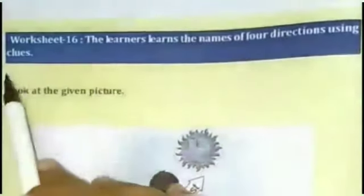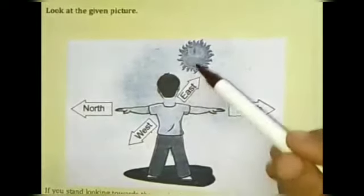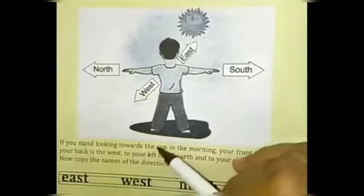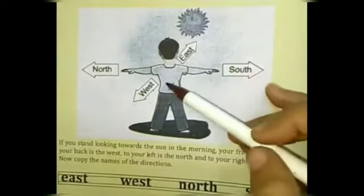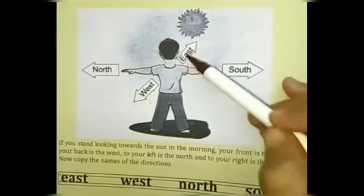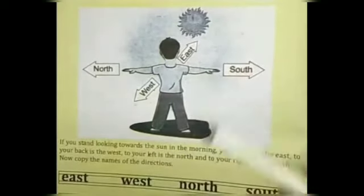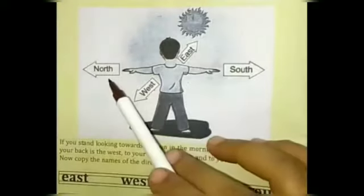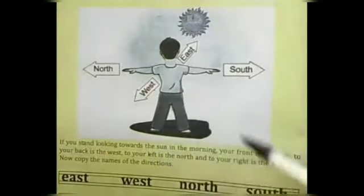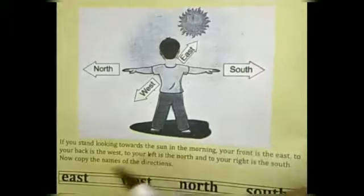Worksheet 16: the learner learns the names of four directions using clues. Look at the given picture — if you start looking towards the sun in the morning, your front is the East, to your back is the West, to your left is the North, and to your right is the South.